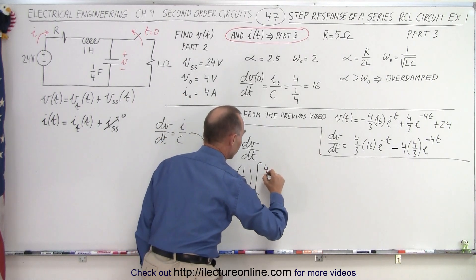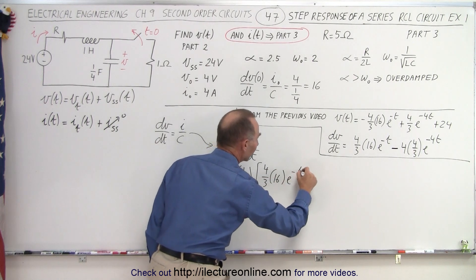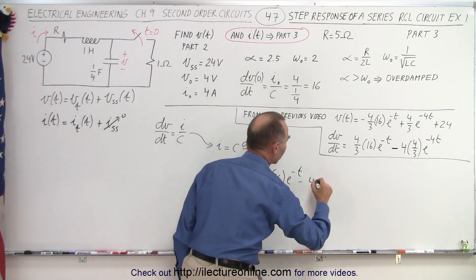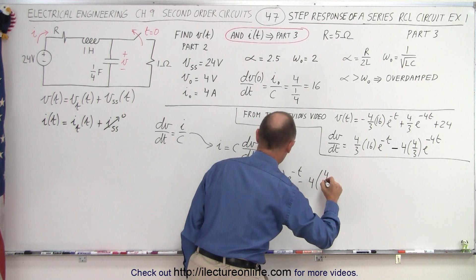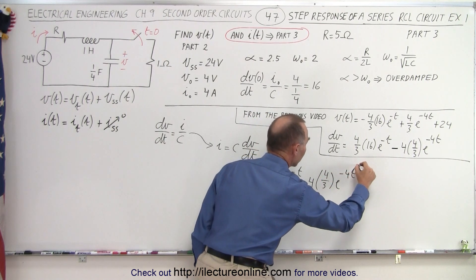Which is equal to four-thirds times 16 e to the minus t minus four times four-thirds e to the minus 4t, like this.